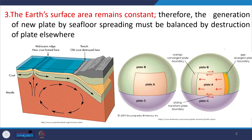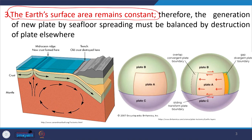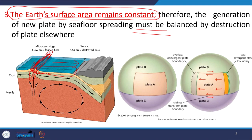The second important assumption is that the Earth's surface area remains constant. Therefore, the generation of new plate material by seafloor spreading must be balanced by the destruction of plate material elsewhere. The oceanic lithosphere created at the mid-oceanic ridge moves as part of the rigid plate system. The area we are increasing at the divergent margin must be compensated by subduction, so whatever area is added must be consumed at the convergent margin.